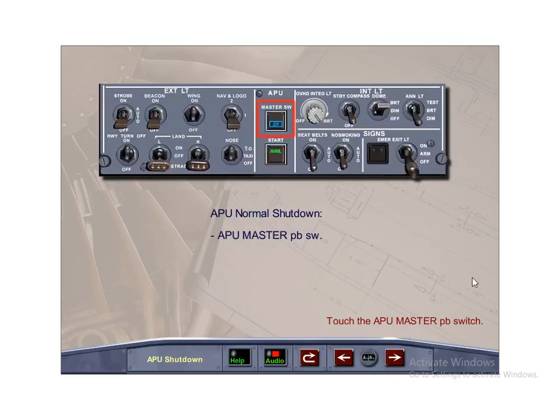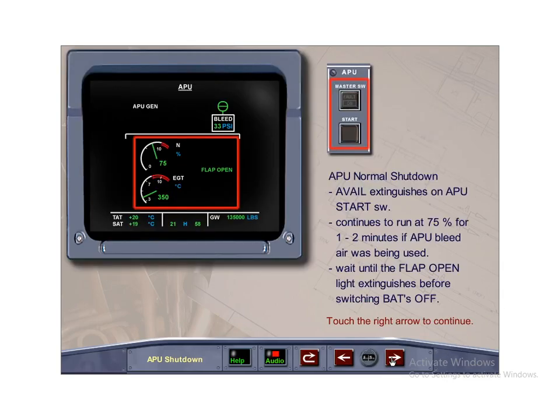Normal APU shutdown is controlled by the APU master push-button switch. The ON light extinguishes. The AVAIL light extinguishes on the APU start switch once the speed drops below 95%. The APU continues to run at 75% for a cooling period of 1 to 2 minutes if the aircraft is using APU bleed air. Wait until the flap open light extinguishes before switching off the batteries.